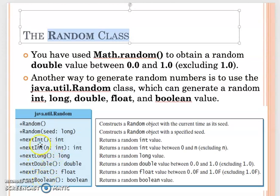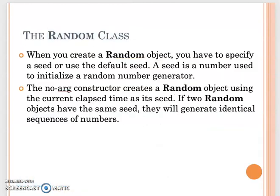One important thing: with nextInt() alone, you don't know the boundary. But you can specify a range — that will give you a value between 0 and n, but not including n. For float and double, they give you a value between 0 and 1.